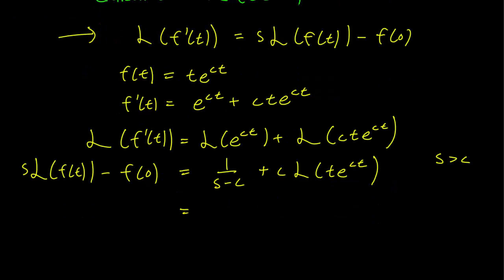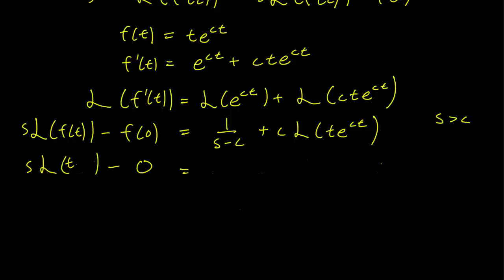But the left hand side, f of 0 is, f of t is t e to the ct, so f of 0 is just 0. And s times l of f of t is just going to be s times l of t e to the ct, this equals 1 over s minus c plus c Laplace transform of t e to the ct.